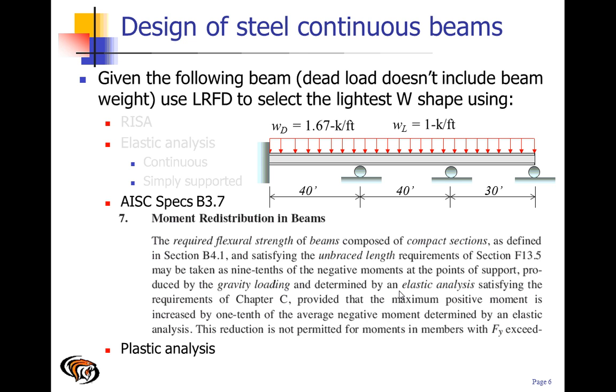As you can see in section B3.7 of the AISC specifications, you are allowed to take the negative moment as nine-tenths of the maximum moment, provided that you increase the moment in the positive side by taking one-tenth of the average of the negative moments determined by elastic analysis.